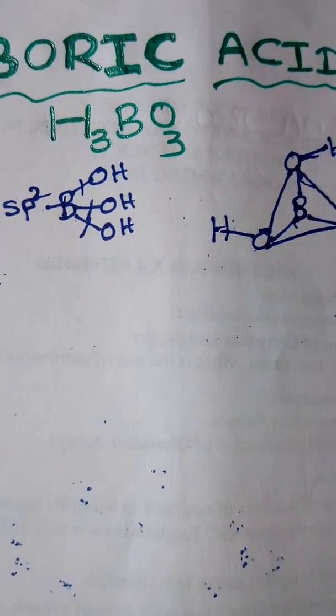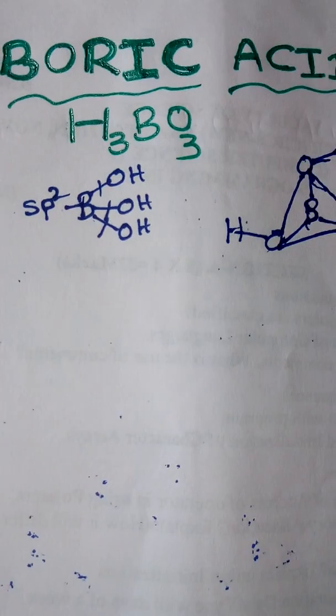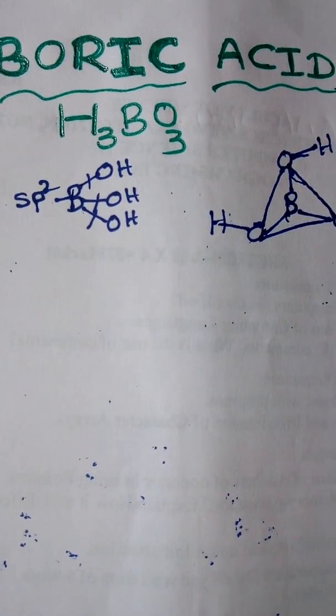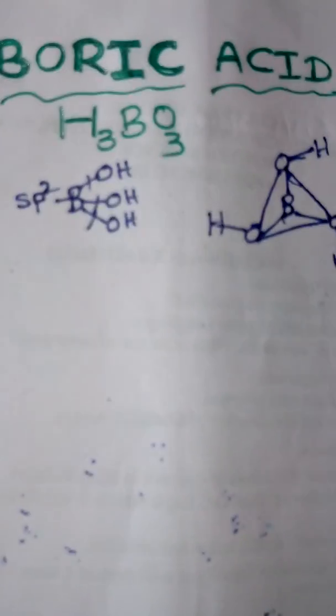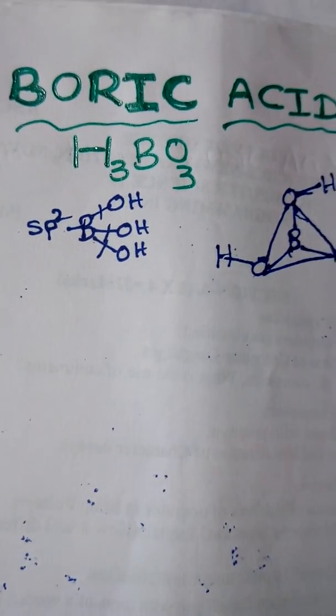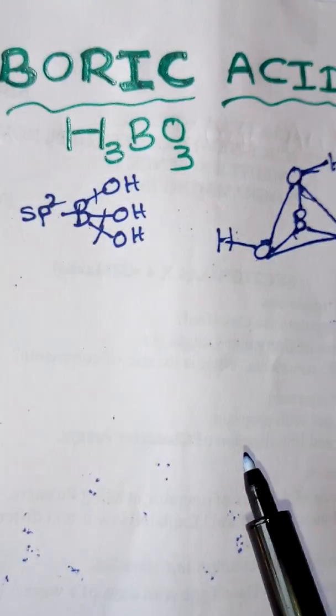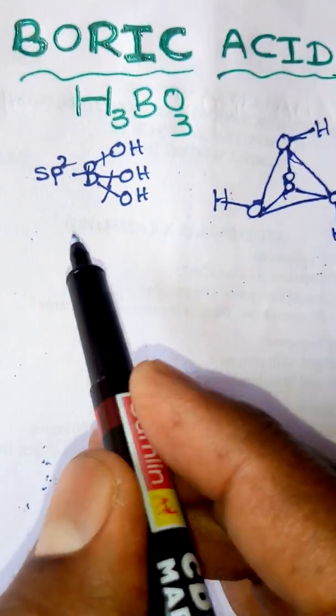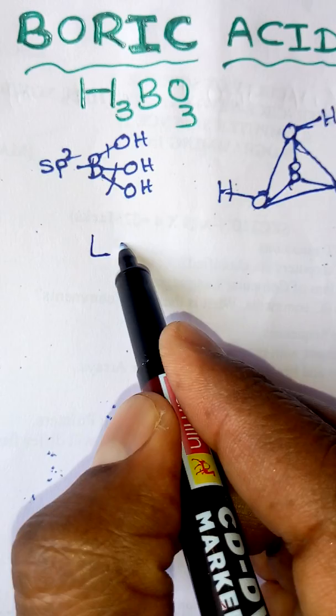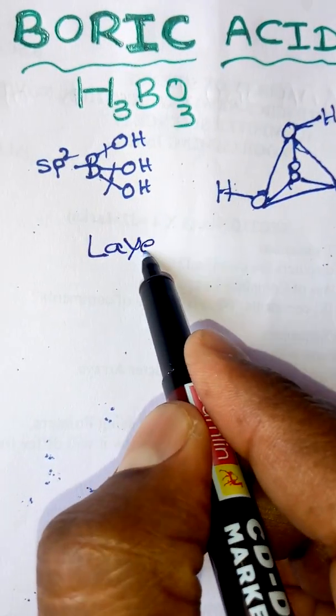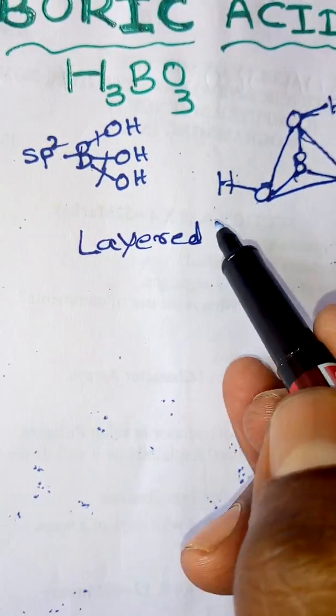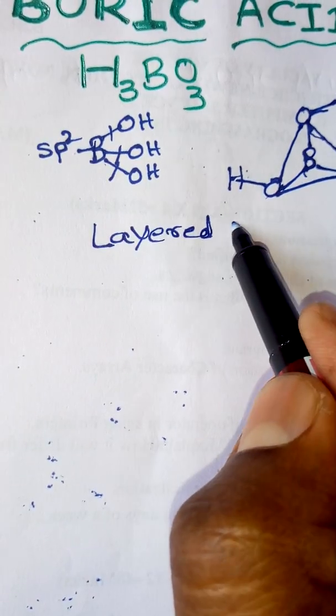they form hydrogen bonds among themselves. Here also, the OH groups of boric acid molecules form hydrogen bonds among themselves and form a layered structure.